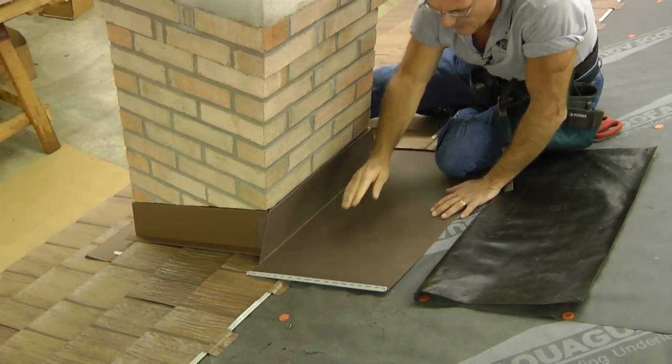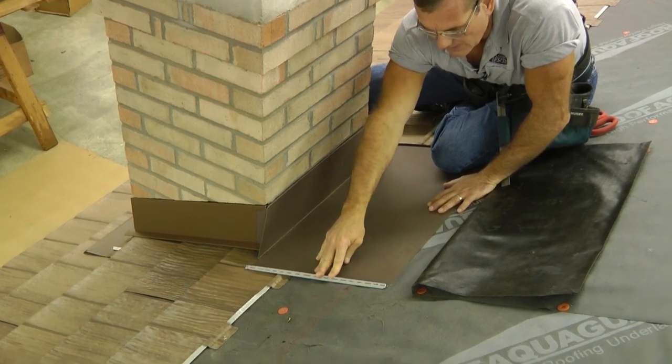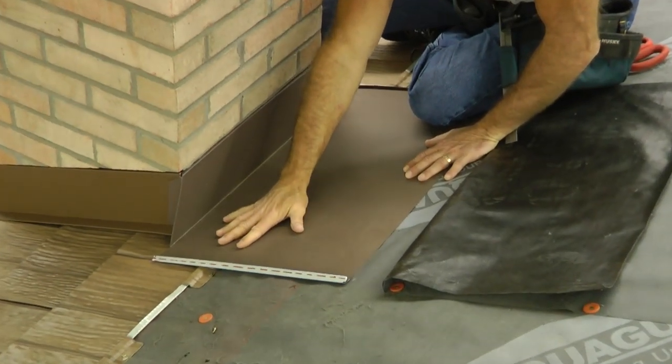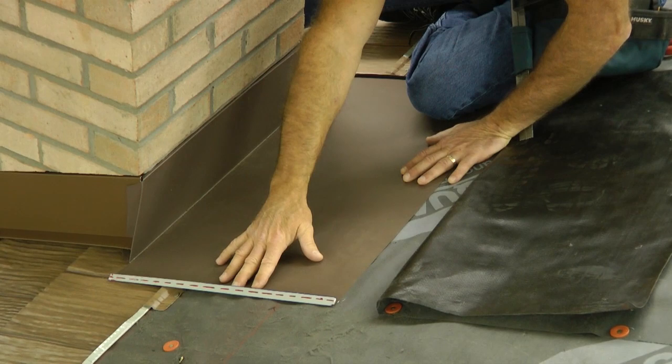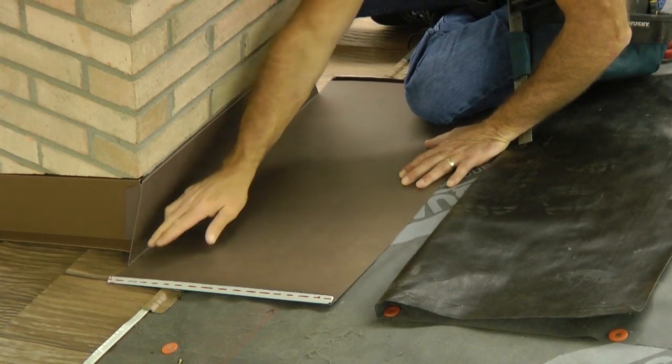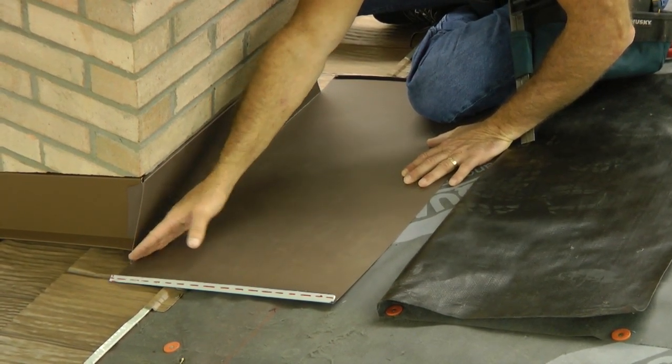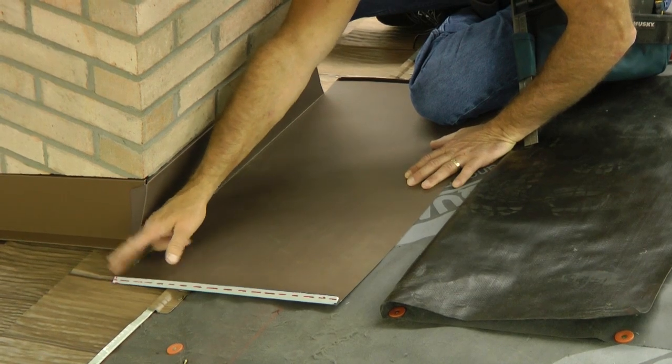Lastly, notice here that I've got two upturned hems on either side of the pan so any water that does get here is channeled down, is diverted around the dog ears and comes out on top of the shingles.